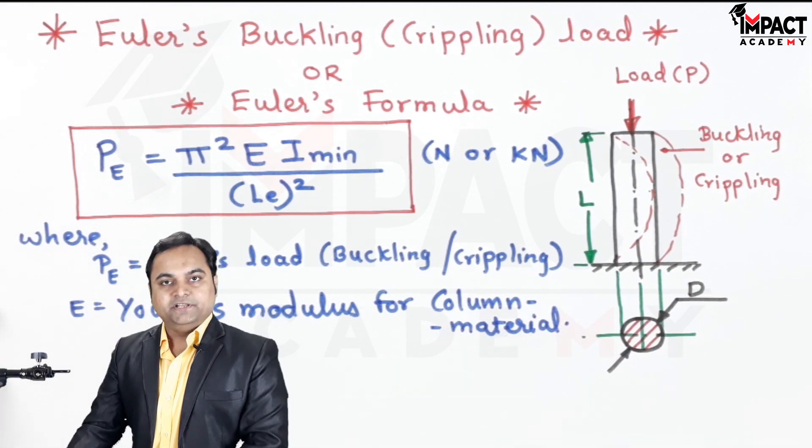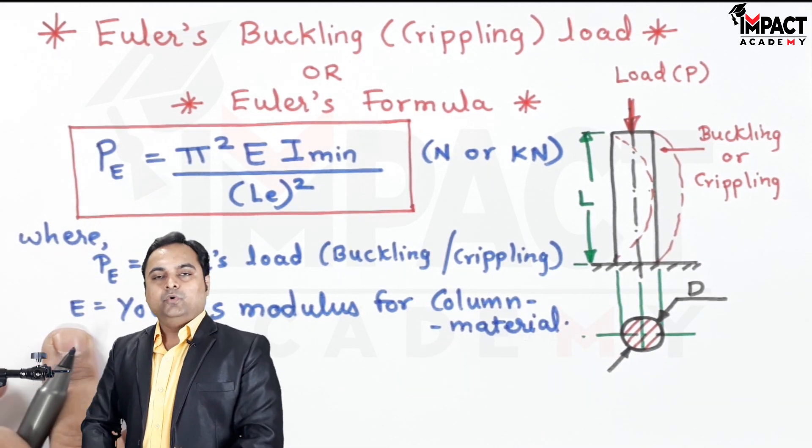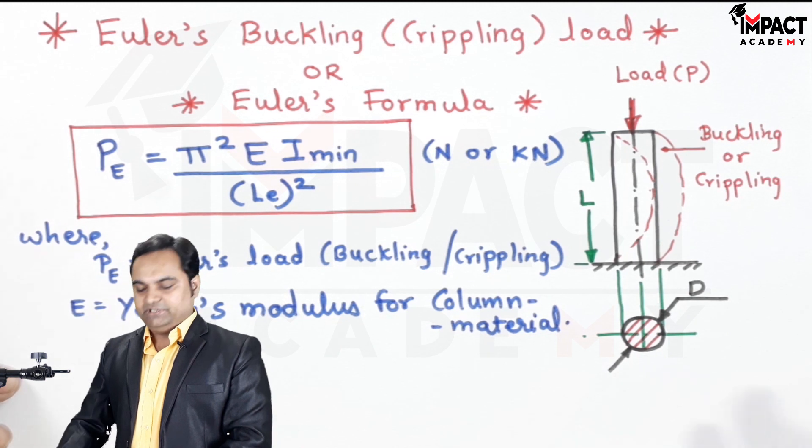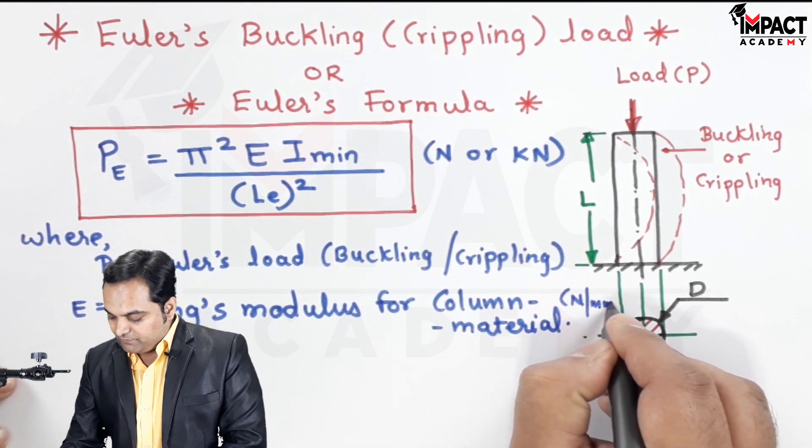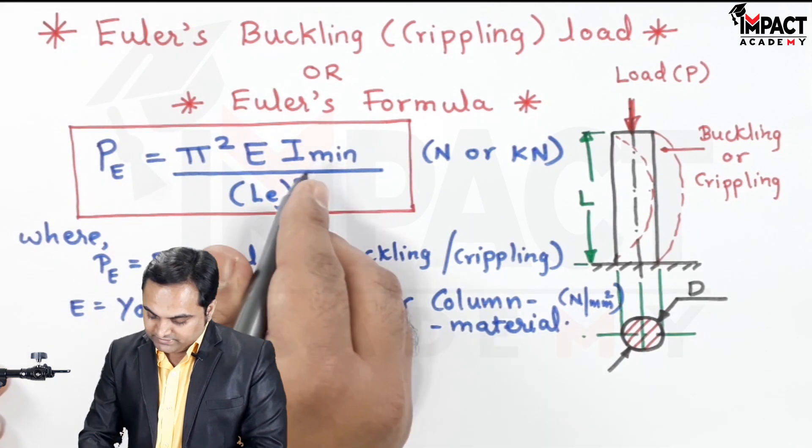E is Young's modulus for column material. This capital E value will change depending upon the material of the column, and it is having the unit Newton per mm square. Next, I minimum.